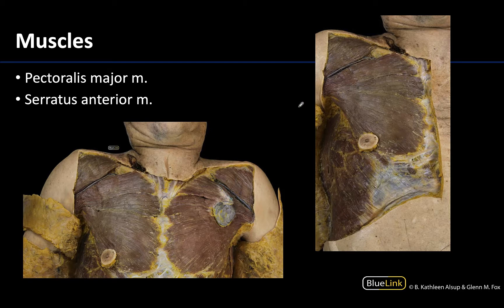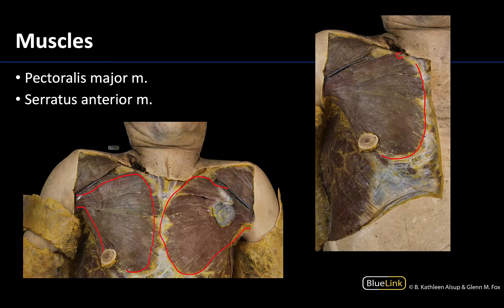We will start with the pectoralis major, and I'm going to outline this on both sides. You can see a pacemaker embedded in this particular region, and the nipple is here to help get an idea of where that location is. The pectoralis major will have an attachment to the sternocostal region as well as up at the clavicle, with its distal attachment on the proximal humerus. If you've dissected this region and removed the subcutaneous tissue, it's generally one of the first muscles you'll see, and it'll be quite dominant, near the deltoid in the shoulder region.